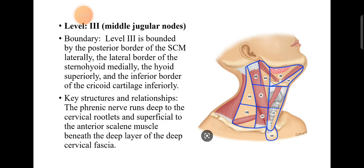The key structures and relationships at Level 3: the phrenic nerve runs deep to the cervical rootlets and superficial to the anterior scalene muscle, beneath the deep layer of the deep cervical fascia.